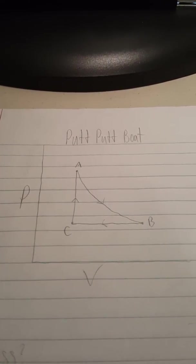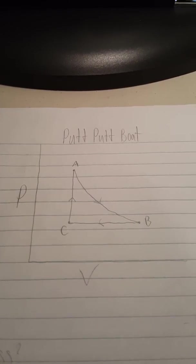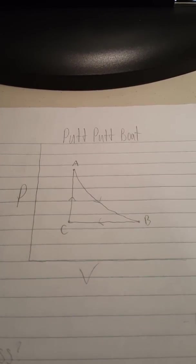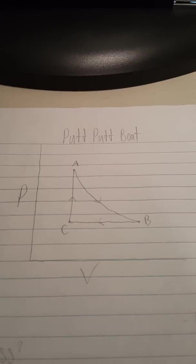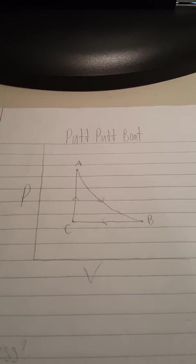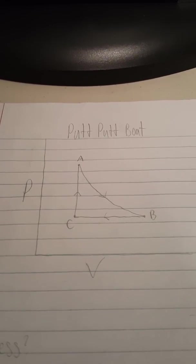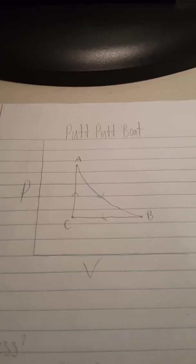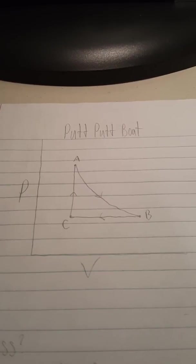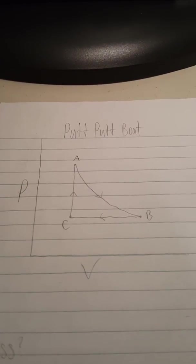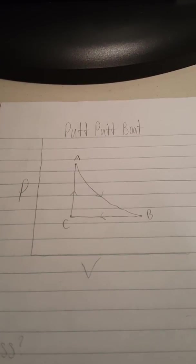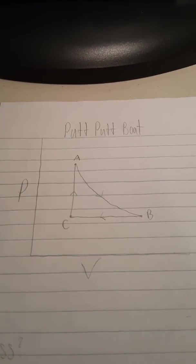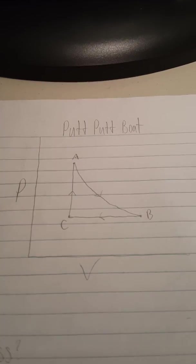Here is a PV diagram of a putt-putt boat, with P standing for pressure on the y-axis and V standing for volume on the x-axis. We can use this graph to answer multiple questions about the whole system in entirety and by each little part itself.